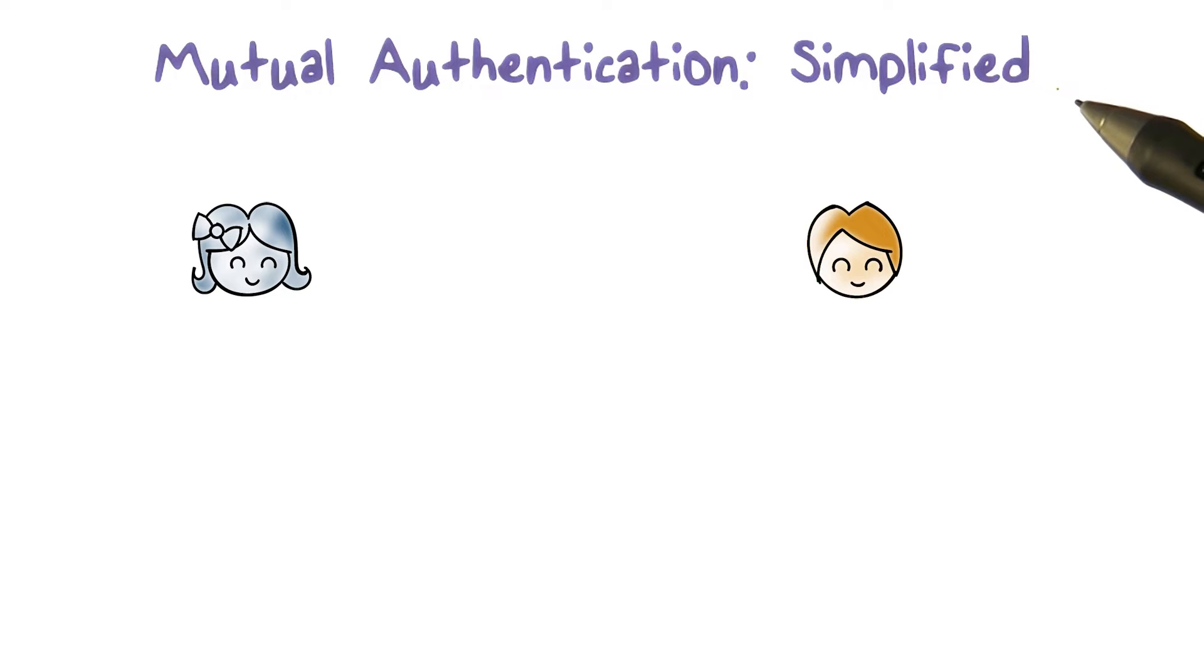The mutual authentication protocol takes five steps. Can we simplify it? That is, can we use fewer steps?